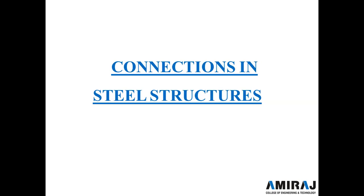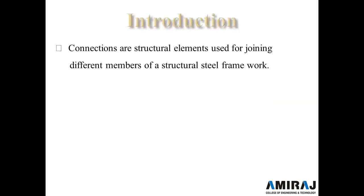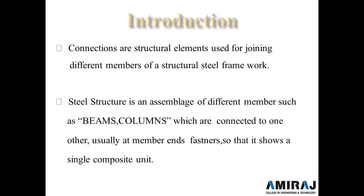Starting with this introduction: connections are structural elements used for joining different members of a structural steel framework. A steel structure is an assemblage of different members such as beams and columns which are connected to one another, usually at member ends, by fasteners, so that it shows a single composite unit. Fasteners means bolts, rivets, or welds, which are used to connect two steel structure components.